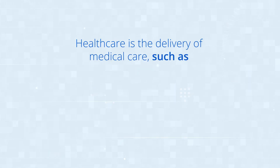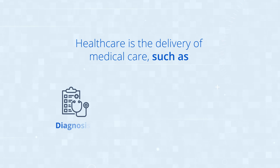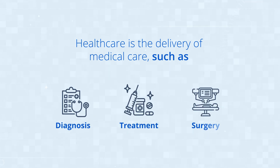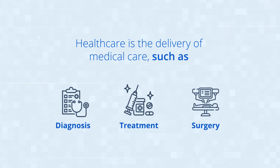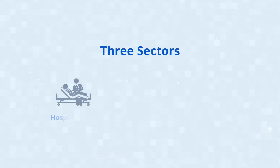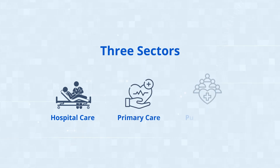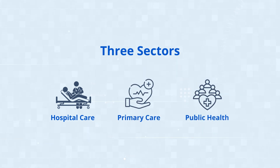Let's begin by defining health and social care. Healthcare is the delivery of medical care such as diagnosis, treatment and surgery. It can be separated into three sectors: hospital care, primary care and public health.